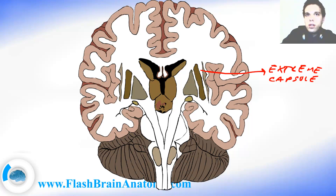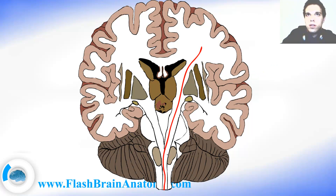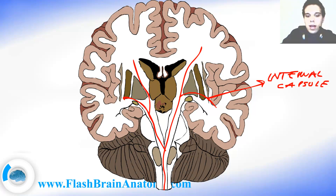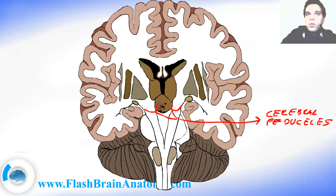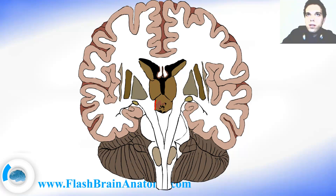We may not forget to write down the internal capsule over here, going on both sides — it is very important. Then we had these two parts over here called the cerebral peduncles, and right between these two we had the interpeduncular fossa.